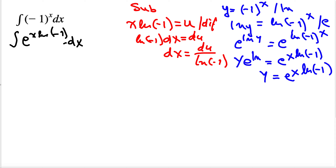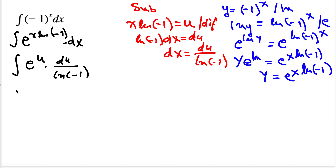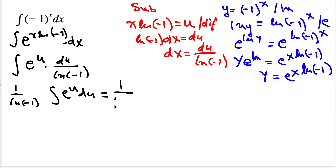And what do we have now? We have the integral of e^u times dx, and instead of dx we substitute du over ln(-1). Now this ln(-1) we factor out to the front, since it is not a variable. So we have (1/ln(-1)) times the integral of e^u du, which equals e^u.